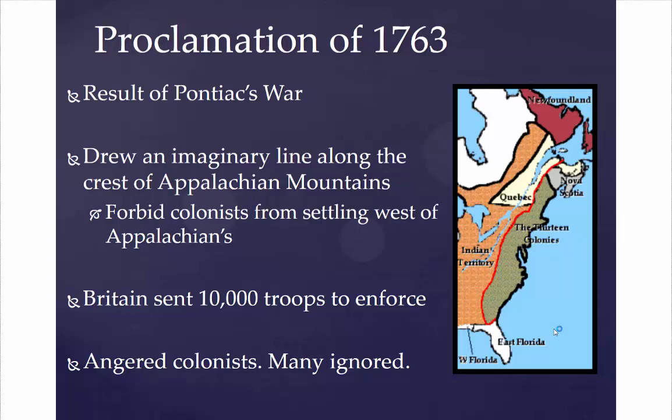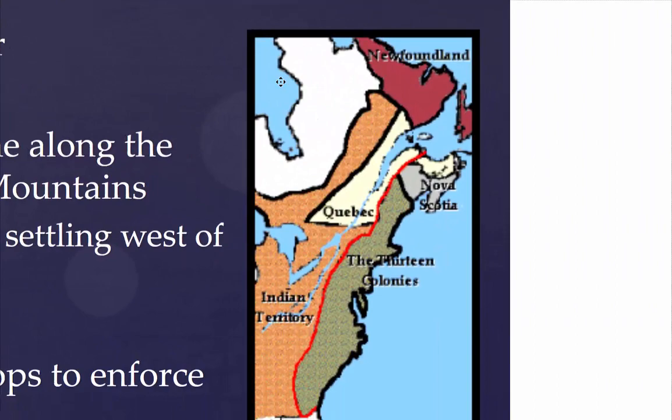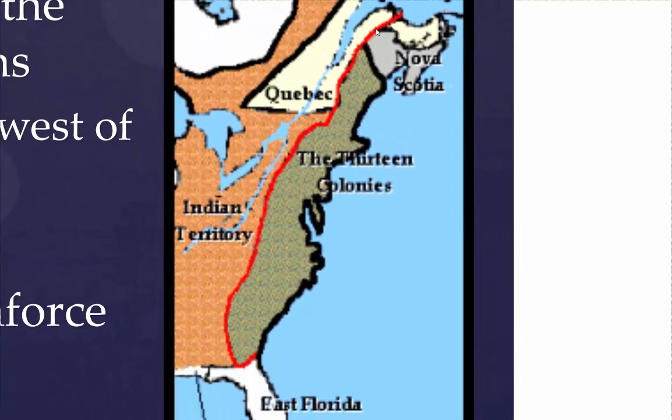The British moved in about 10,000 troops to try to enforce the Proclamation of 1763 in the colonies. This really angered many of the colonists and was mostly ignored. The red line traced along the Appalachians marked where colonists were not supposed to settle, as the land to the west was designated Indian Territory — the British didn't want any more scuffles with the Native Americans.